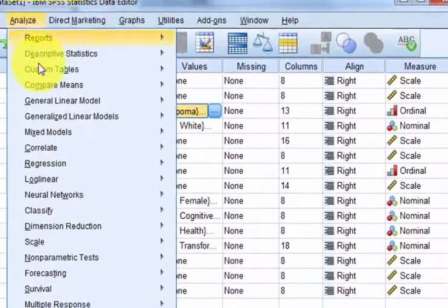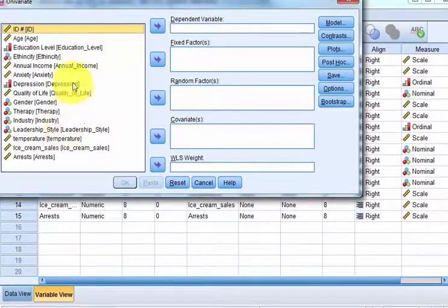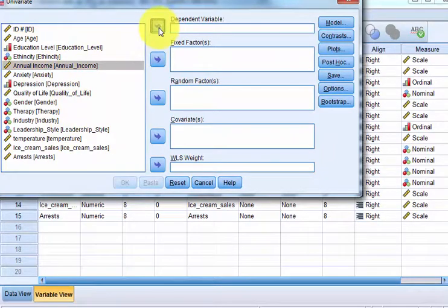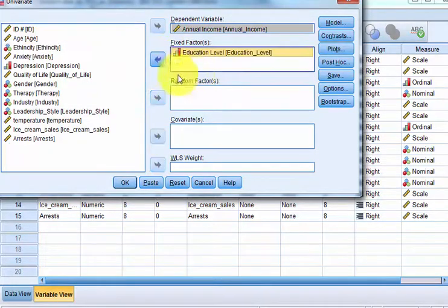So we'd simply go to Analyze, General Linear Model, Univariate. Annual Income, that's our DV that's physically measured in everybody. Our fixed factors is the education levels. And even though it is ordinal, because there's only six different groups, you can use it like that if you want.